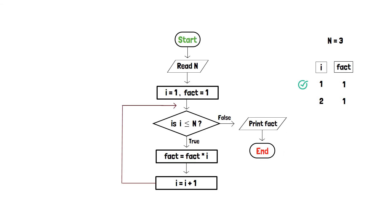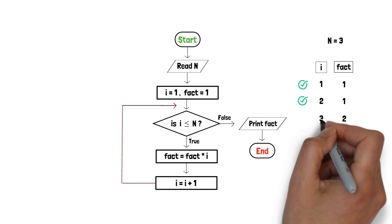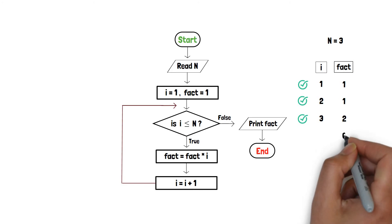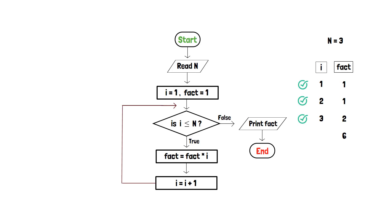Similarly again, as 2 is less than or equal to 3, the condition inside the decision box is true. Thus, fact becomes 1 multiplied by 2, which is 2, and i is updated to 3. Again, as 3 is less than or equal to 3, the condition in the decision box is true. Hence, the variable fact is changed to 2 multiplied by 3, which is 6, and i is incremented to 4.